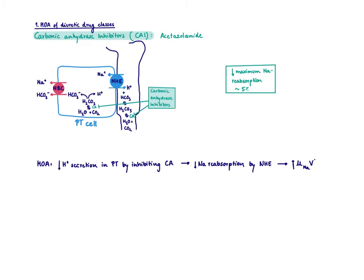Carbonic anhydrase is not only found inside the cell — it's also found as a brush border enzyme, and is therefore responsible for generating water and CO2, which then supply the intracellular carbonic anhydrase to make carbonic acid.